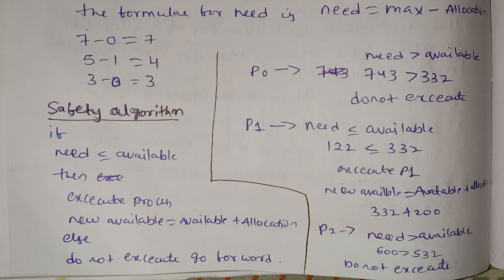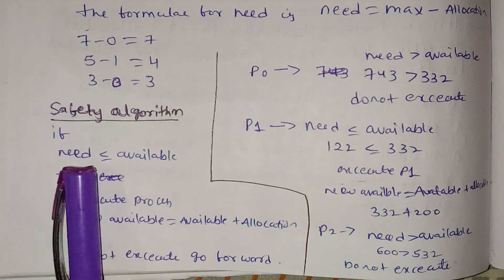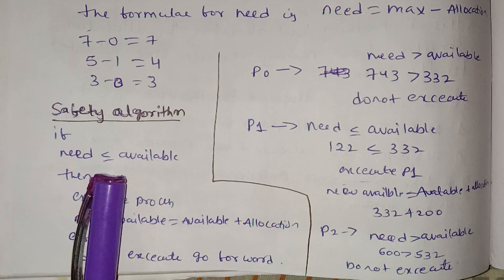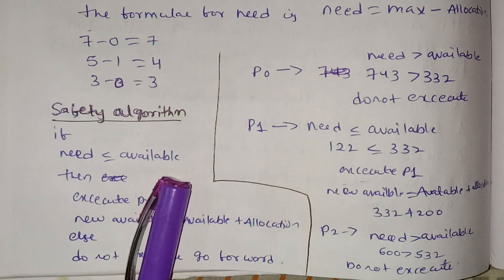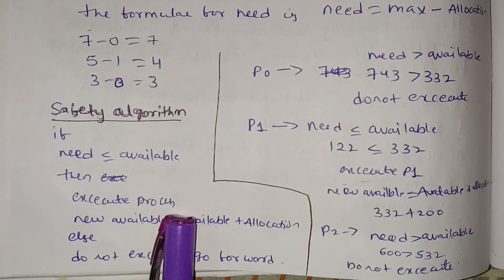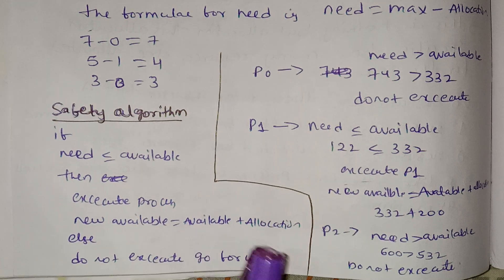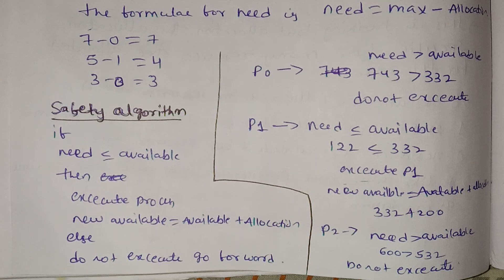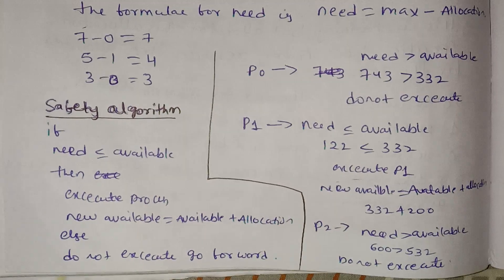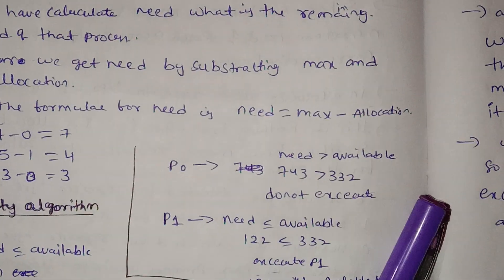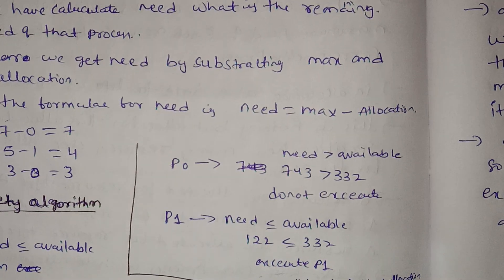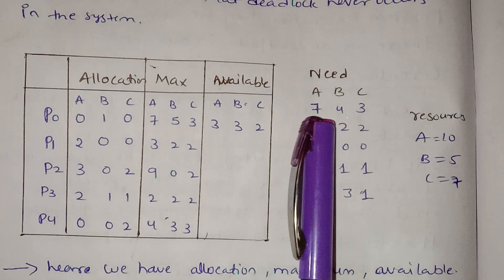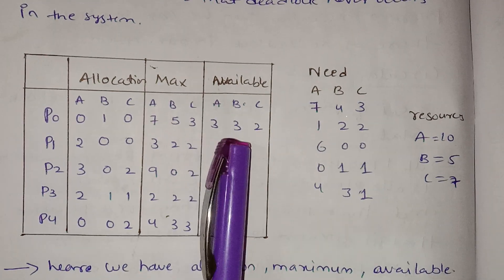Now we will see the safety algorithm. If need is less than or equal to available, then execute the process. New available equals available plus allocation. If need is not satisfied, do not execute. We check: if need is greater than available, skip that process.